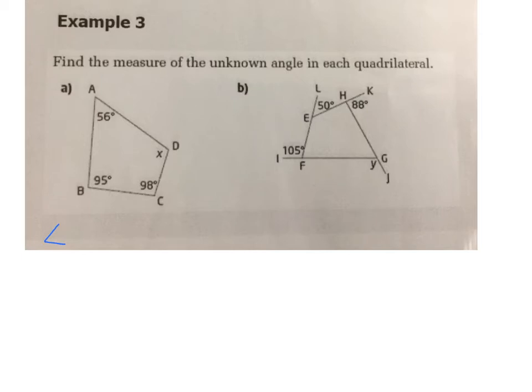The missing angle is this angle, so we can read it ADC, good, or we can even label it CDA. Remember we said that the letter in the middle is the angle that's indicated.